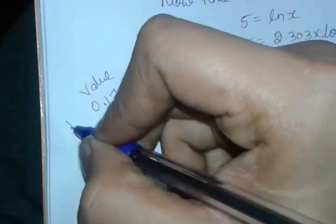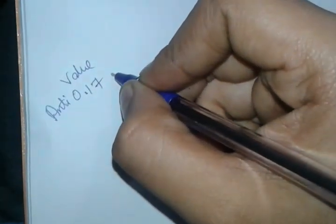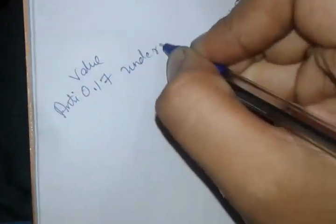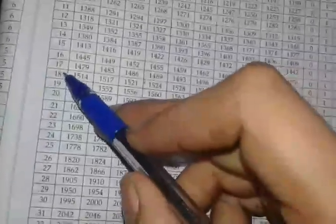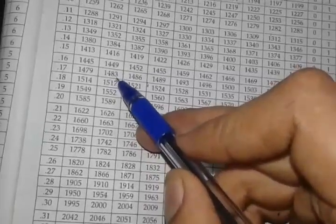Value of antilog of 0.171 under 1.171. Under 1 you have 1483. That means you should take 1.483.